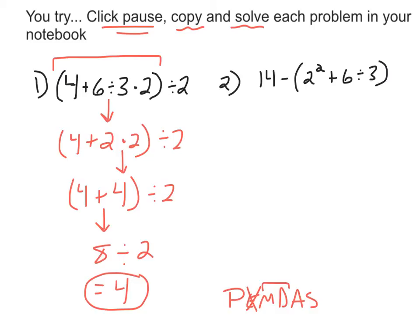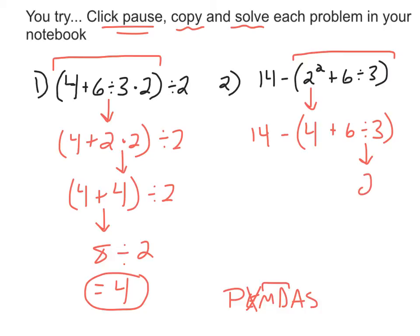Number 2 also has parentheses, so I'm going to work inside them first. The first thing I'll do is the exponent, because exponents come before multiplications, divisions, additions, and subtractions. 2 squared is 4 — it's 2 times 2 — plus 6 divided by 3, still in the parenthesis, and it's 14 minus whatever comes out of those parentheses. My next step inside the parenthesis is to divide, because division comes before addition: 6 divided by 3 is 2, so it's 4 plus 2 in parenthesis. 4 plus 2 is 6, so I'm left with 14 minus 6. 14 minus 6 is 8. So my final answer is 8.